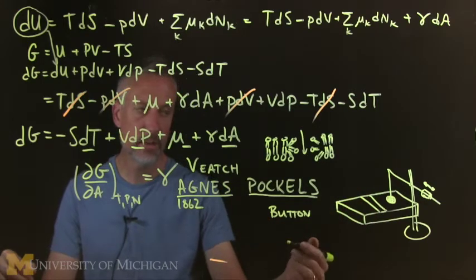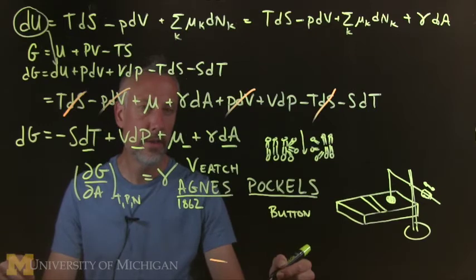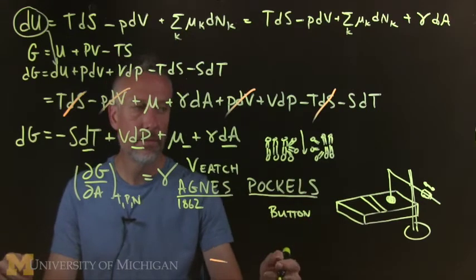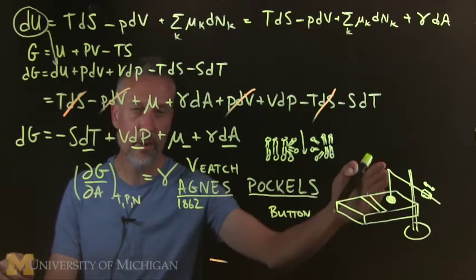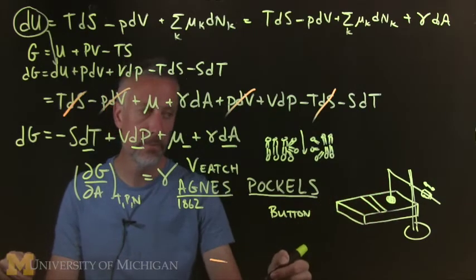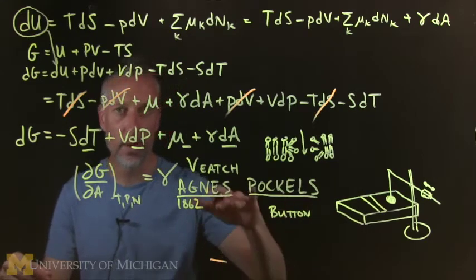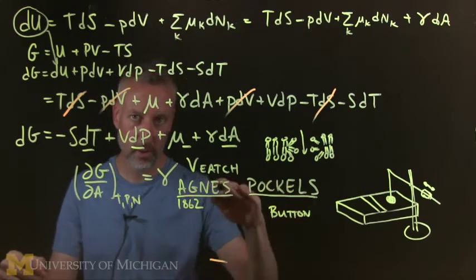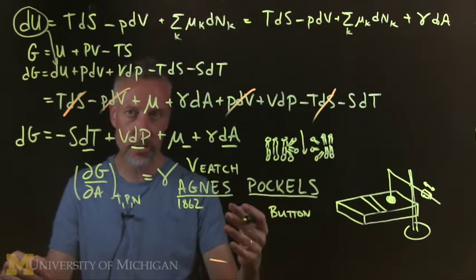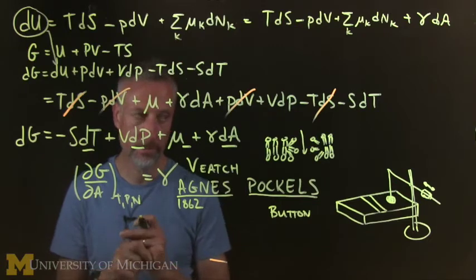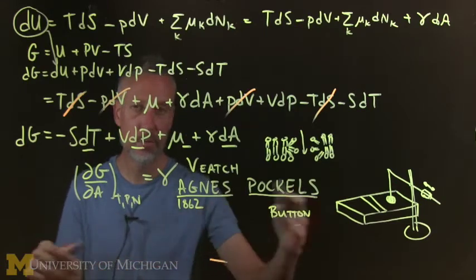So she used buttons which you might have had for clothing. And out of this she connected this to a scale, a balance, with a movable weight that she obviously calibrated. And what she simply did was she measured what was the force required to pull the disc off of the surface as a function of the pressure or the surface area created by sliding this partition over.